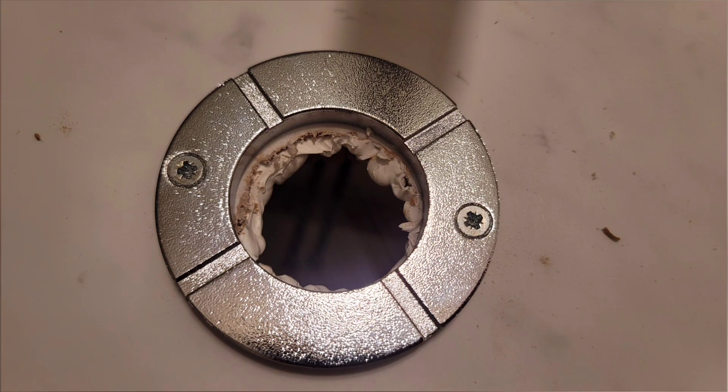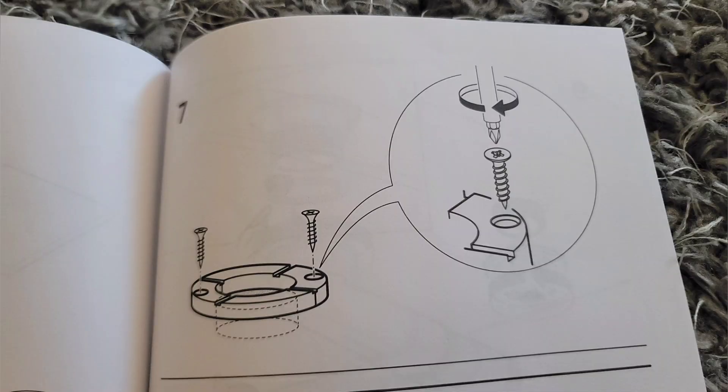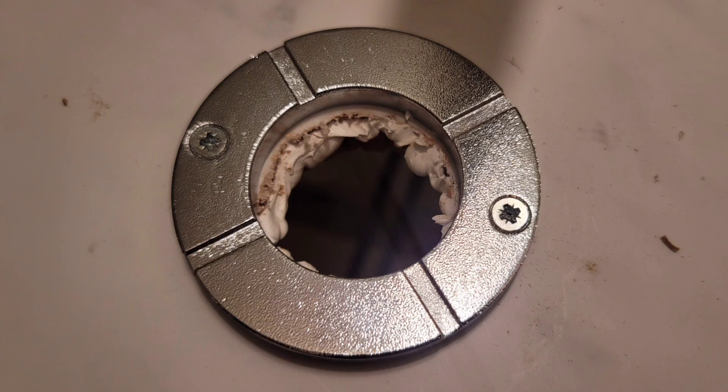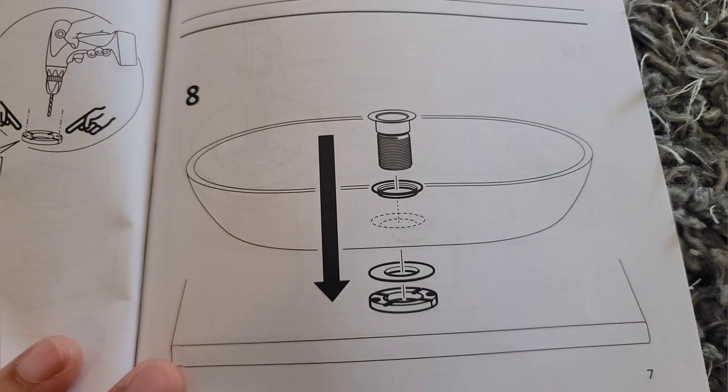So, I already put it together there. But, step seven is now saying to drill them in. And, that's what they look like. Step eight is just saying to assemble the rest of the drain pipe pieces together. So, before you put the sink over that metal part, there is this little rubber washer that you put right over that metal plate.